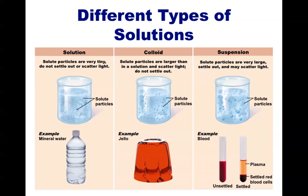These particles, however, will still not settle out to the bottom of the solution. Settling does occur in a suspension. Particles in a suspension can be very large and will settle out of the solution if given enough time, and may also scatter the light passing through. Our blood is a good example of this — normally it appears red, but if given time, the heavier red blood cells will settle out at the bottom.